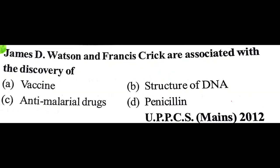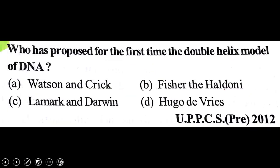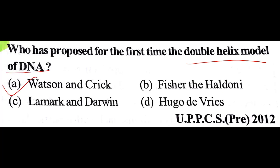James D. Watson and Francis Crick are associated with the answer B: structure of DNA. They proposed for the first time the double helix model of DNA. The answer is A: Watson and Crick.